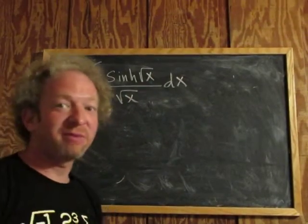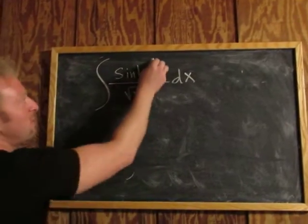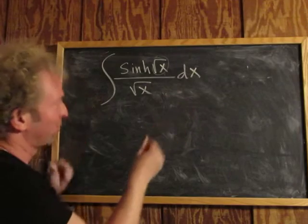If you've never done this problem before, the natural thing to try is a u-substitution. What would you try? You would let u be that piece, what's inside the trig function, or the hyperbolic trig function.